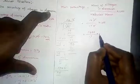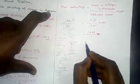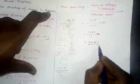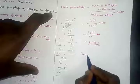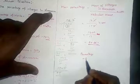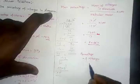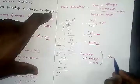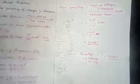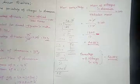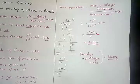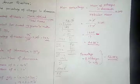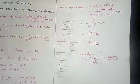So we have got the percentage: 82.35 percent. The percentage of nitrogen in ammonia is equal to 82.35 percent. If you like this video, please subscribe and click the bell button to get instant notifications. Like, share, and comment. Thank you.